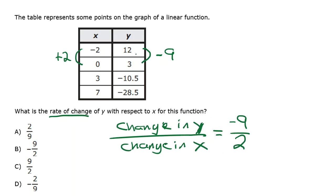So how do we find the rate of change? Again, we just find out how much y went up or down by from one point to the next and we divide that by how much x went up or down by from one point to the next. Since y went down by 9 it was minus 9 divided by since x went up by 2 it was divided by positive 2.